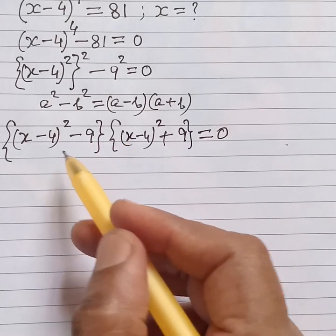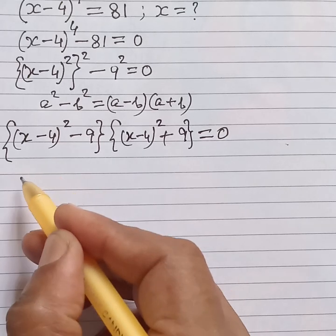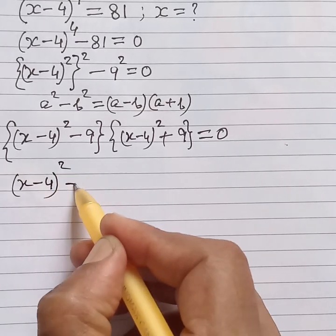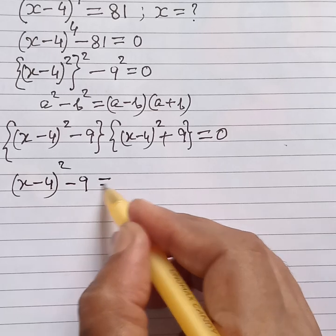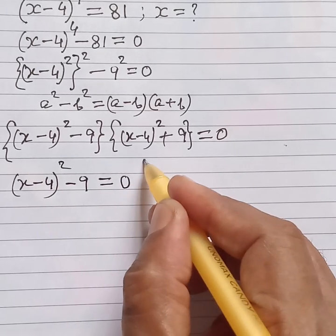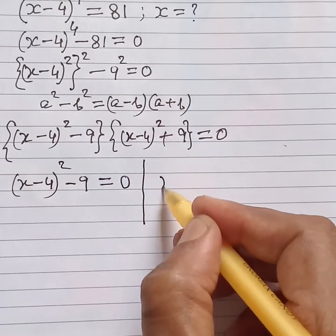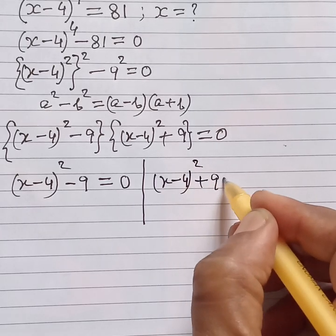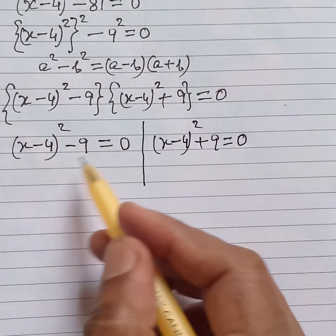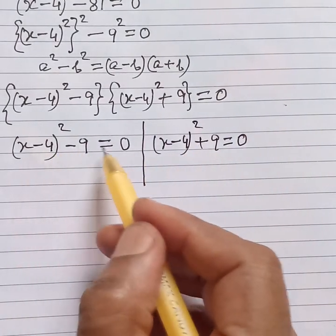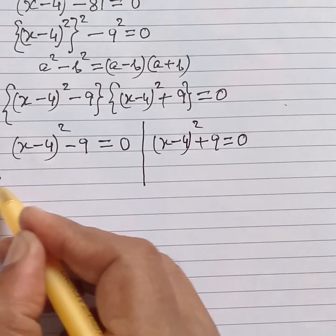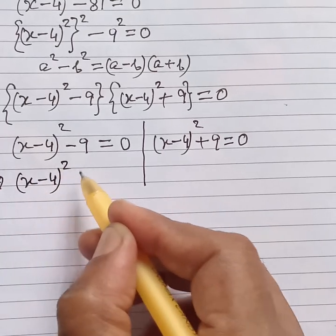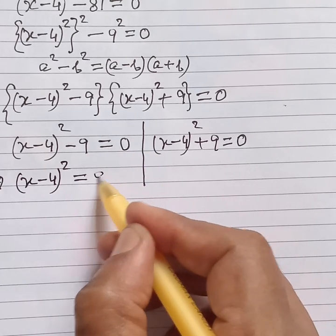Therefore, as a product of two terms equal to zero, by the zero product rule we can say: (x minus 4) squared minus 9 equals 0, and (x minus 4) squared plus 9 equals 0. From the first equation, moving 9 to the right side gives (x minus 4) squared equals 9.